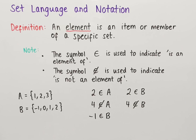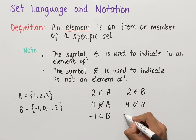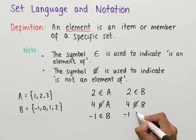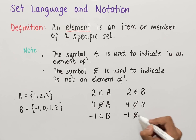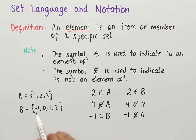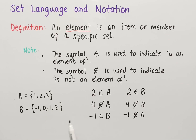If we take minus one, then minus one is an element of B since minus one is within that set. However, minus one is not an element of A since minus one is not within this set. Likewise, this would apply if we were to have letters, words, negative numbers, fractions, and so on.